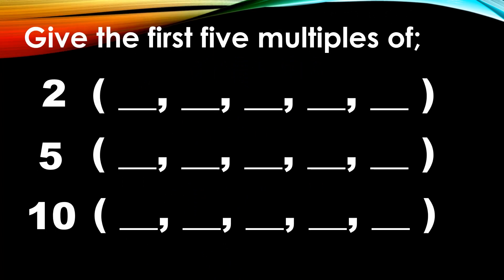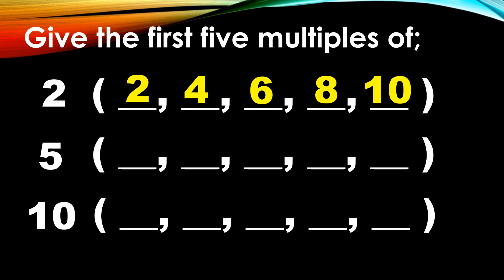This time, I will let you give the first 5 multiples of the following numbers. First, number 2. What are the first 5 multiples of 2? So we have 2, 4, 6, 8, 10. These are the first 5 multiples of 2.